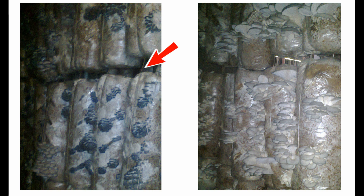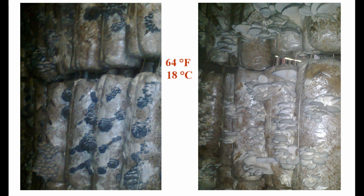Primordia developed beautifully — dense, thick, and dark gray. But then the outdoor temperature spiked to 73–77°F (23–25°C) and the grow room stabilized at 64°F (18°C). Humidity dropped below 85% and my humidity system couldn't maintain the levels needed. The mushrooms matured too quickly. As you can see in the photo, they became lighter in color, very thin and lightweight. This shows how insufficient humidity combined with high temperatures can dramatically reduce quality.